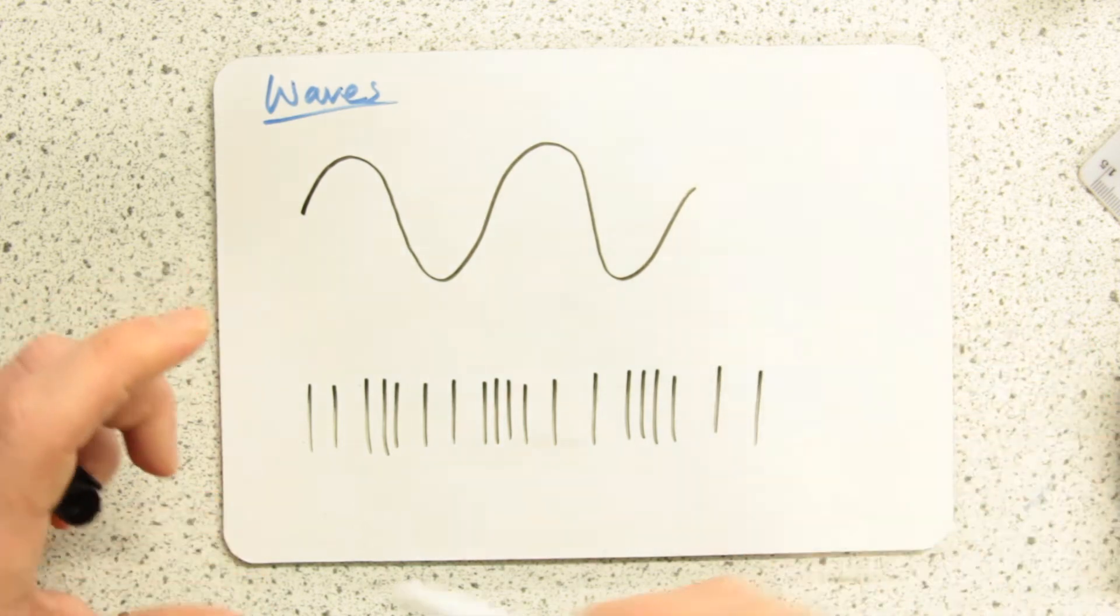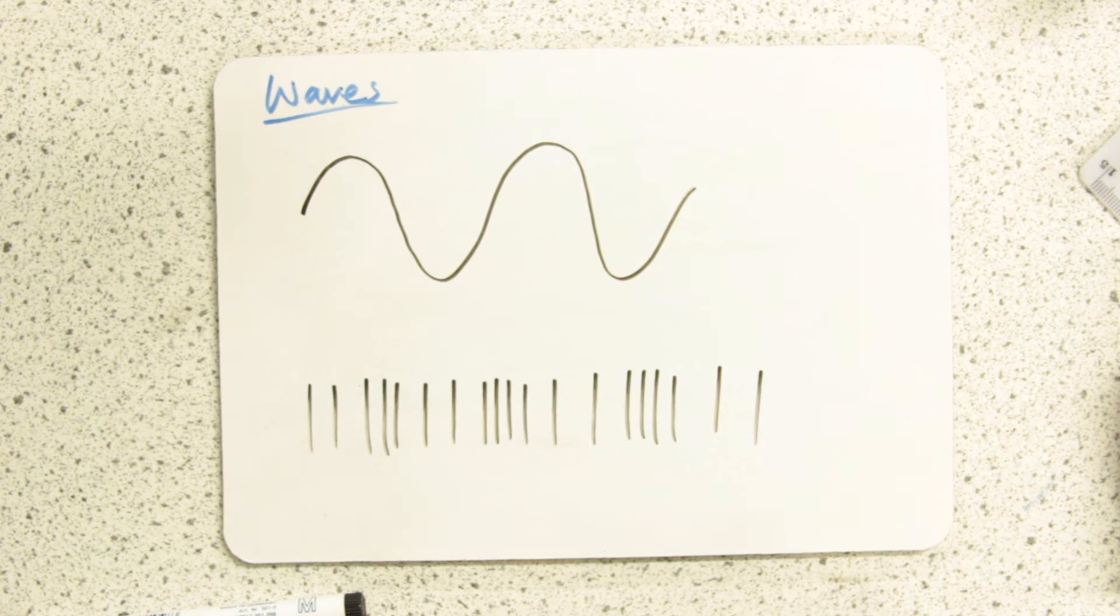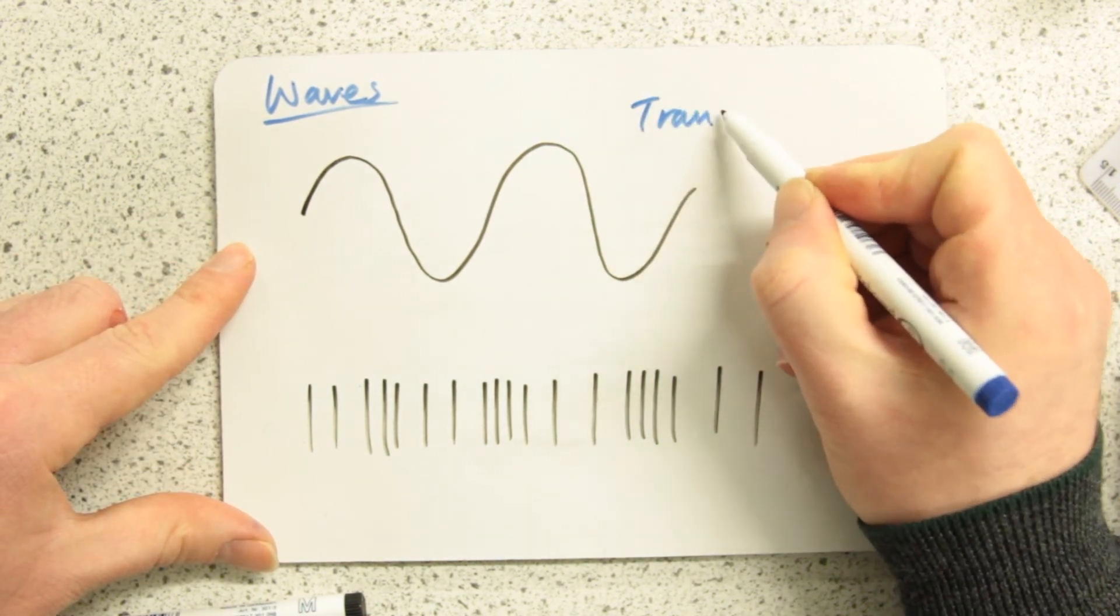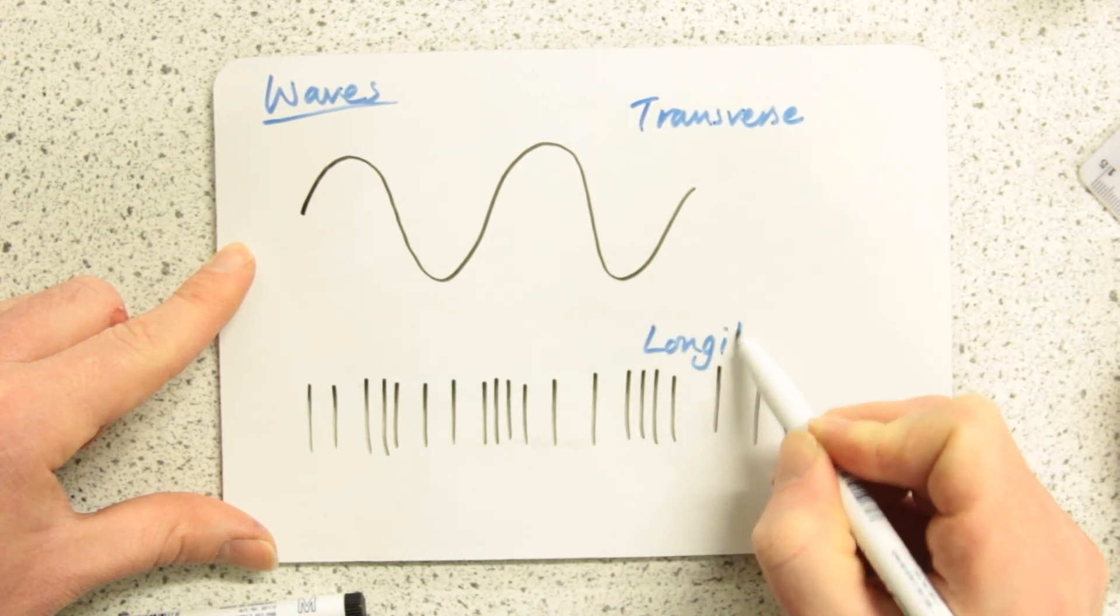You don't just have to recognize them, you have to be able to describe what are the characteristics, what makes a transverse wave a transverse wave and what makes a longitudinal wave a longitudinal wave.